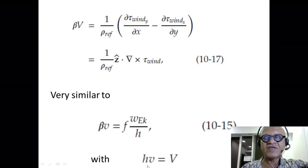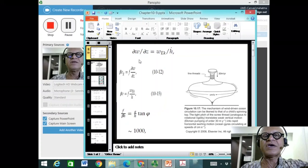How does it work? So here we have taken h times v, then you'll still get beta v equals f times w_Ekman, which is curl of tau_wind, just showing the equivalence here.